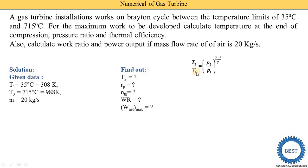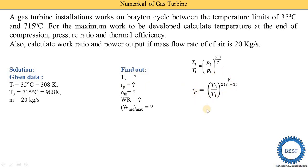To find T2, this equation is used: T2 / T1 = (P2 / P1) raised to (gamma − 1) / gamma. However, to calculate T2 we need the pressure ratio P2/P1, which is not given. So first we calculate the pressure ratio using the derived equation: RP = (T3 / T1) raised to gamma / (2 * gamma − 1).